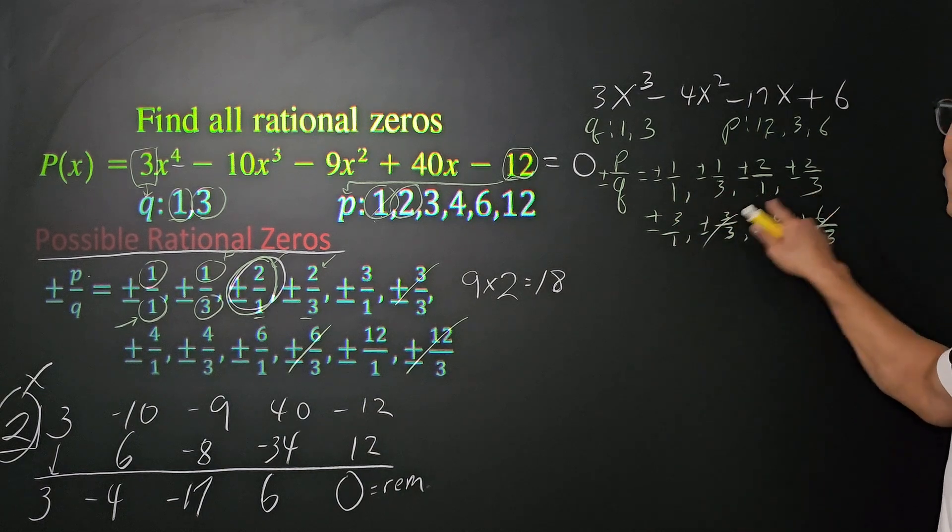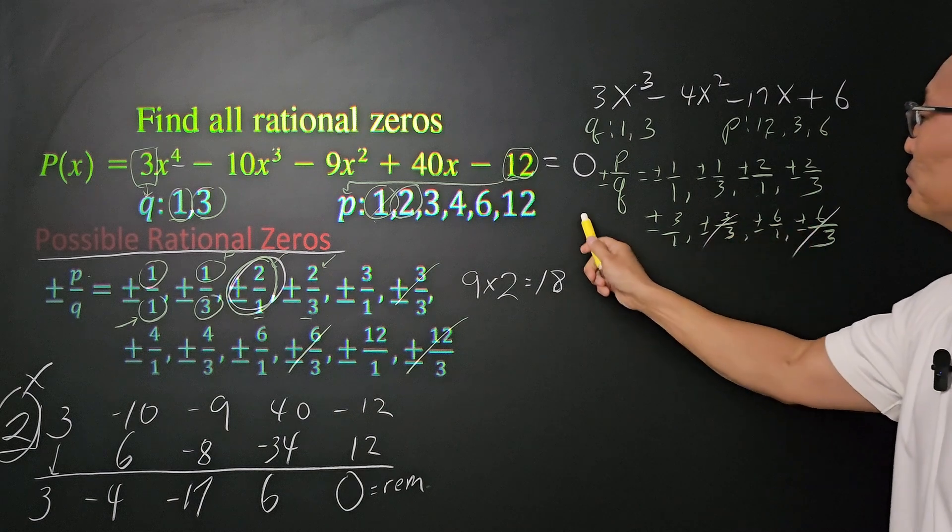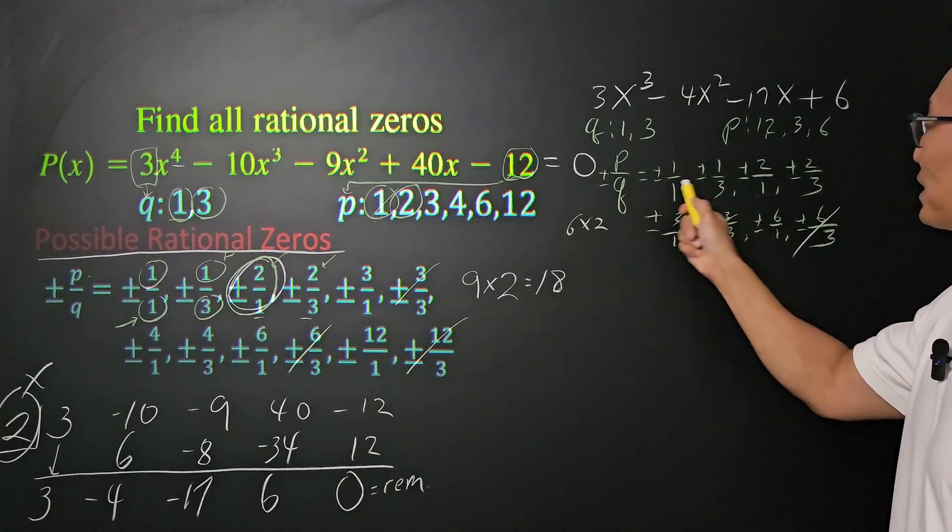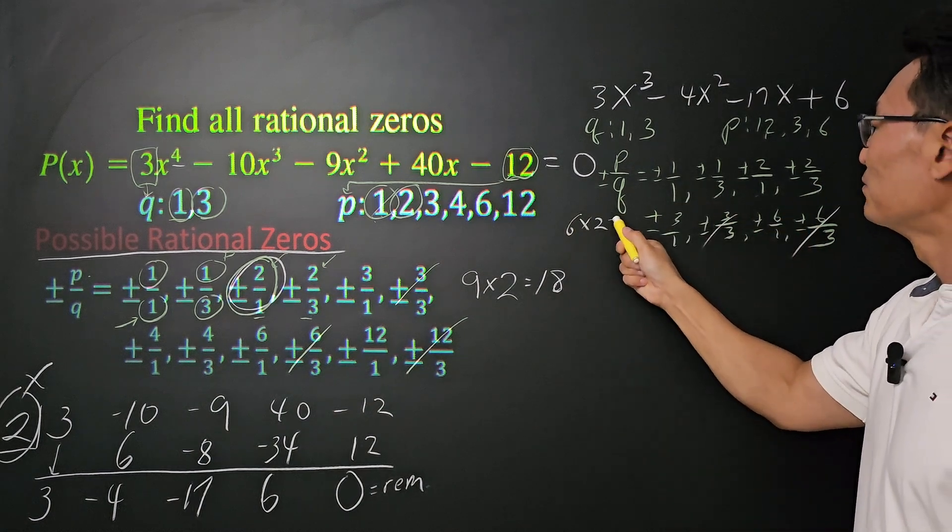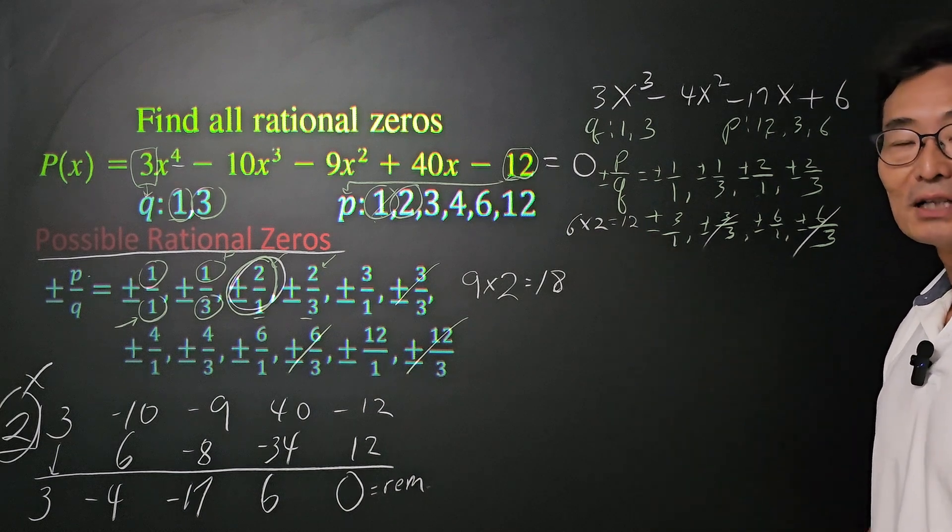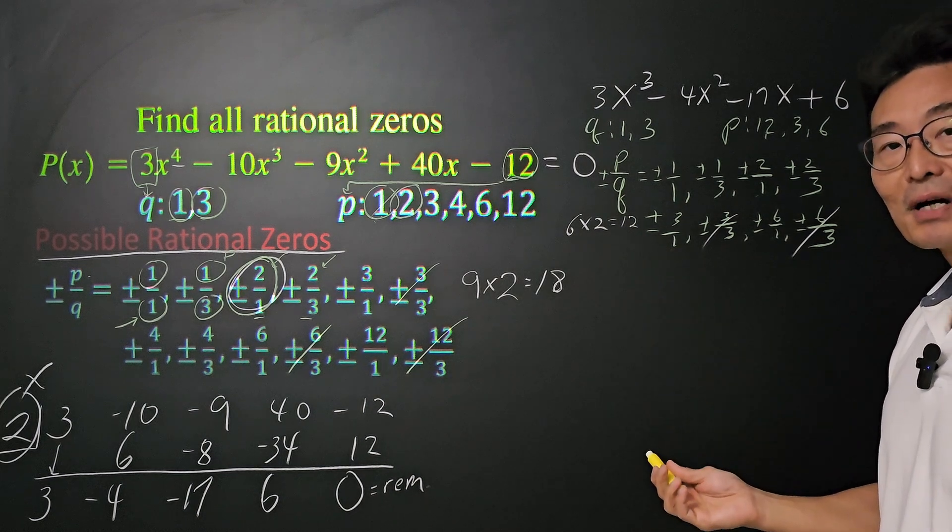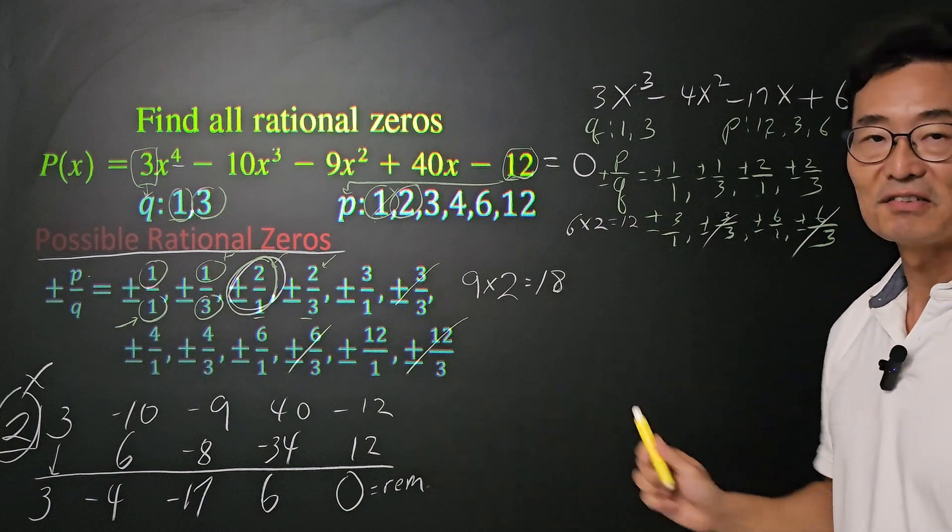Then, we now have 1, 2, 3, 4, 5, and 6, or times 2 because of the fact that it's plus minus. We have 12 possible values of zeros. How do we figure out which one? We're going to do the synthetic division again.